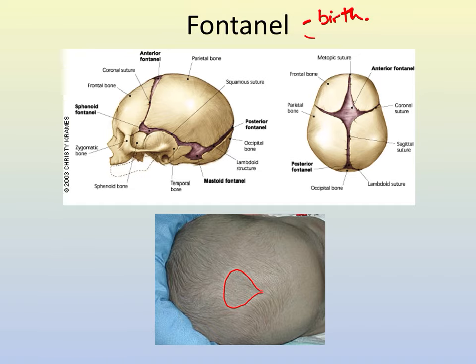The second reason is that babies' heads are small but adults' heads are big — there has to be room to accommodate rapid growth in the brain. If you think about the size of the head of a toddler, it's pretty big relative to body size. So we want to leave a lot of room and flexibility for rapid brain growth. Those are the two reasons why we have fontanelles.